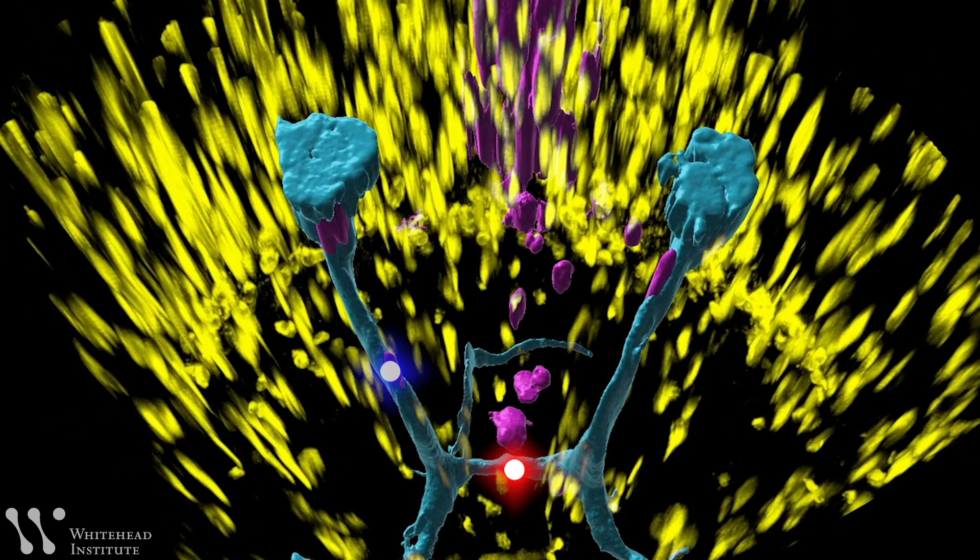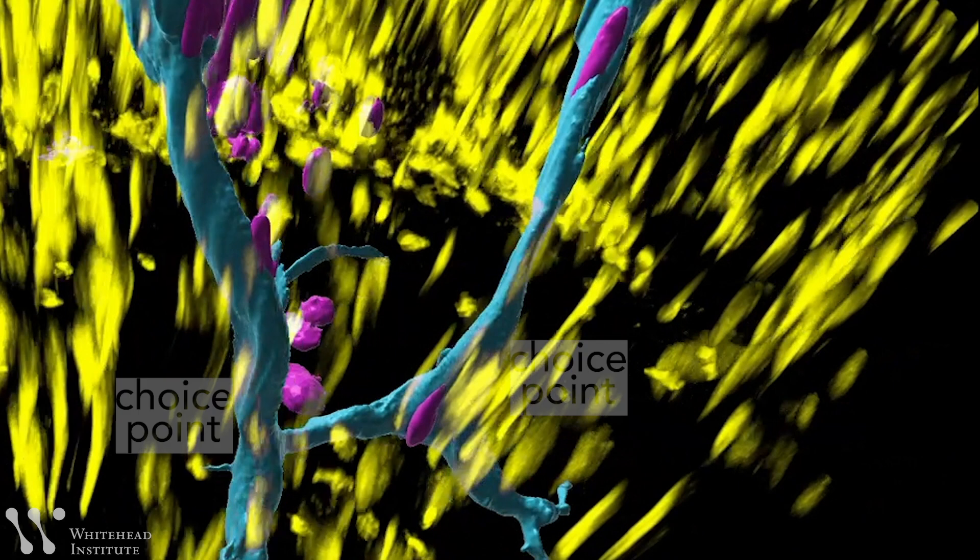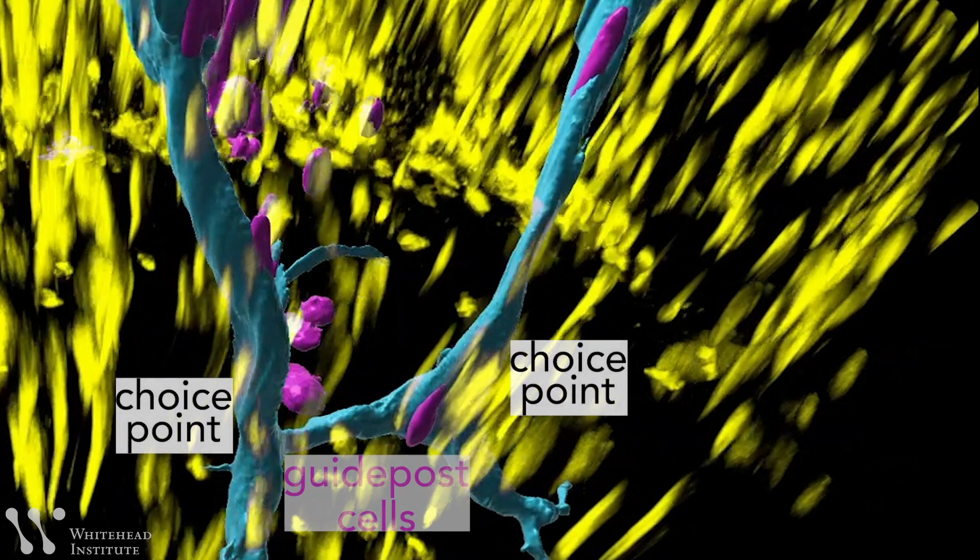Just as in humans, nerve cells from the planarian's eyes have to cross over each other to reach the opposite side of the brain. At two places called choice points, the guidepost cells are able to direct growing nerve cells from the eye to the correct side of the brain.